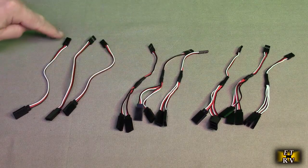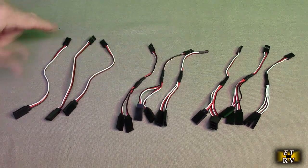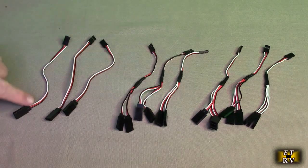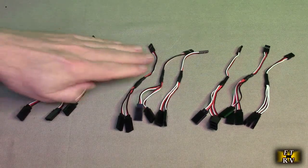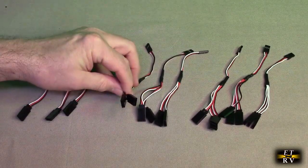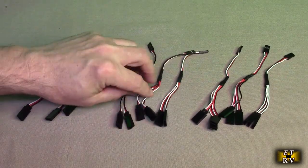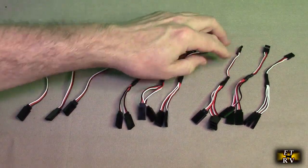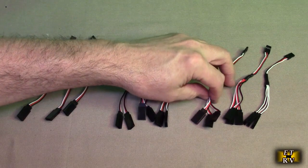So you see you get three of basic extension pieces right here where it's got the smaller JST servo to the female, three of those. Three of the servo male to two soldered female connectors, three pack of that. Then three of the JST servo to three female connectors.